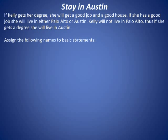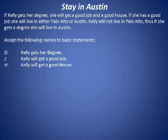We begin by assigning these names to basic statements. D represents Kelly gets her degree. J represents Kelly will get a good job. H represents Kelly will get a good house. P represents Kelly will live in Palo Alto, and A represents Kelly will live in Austin.